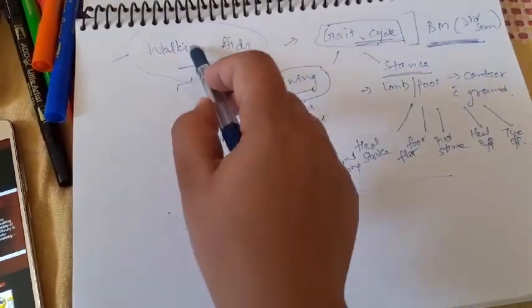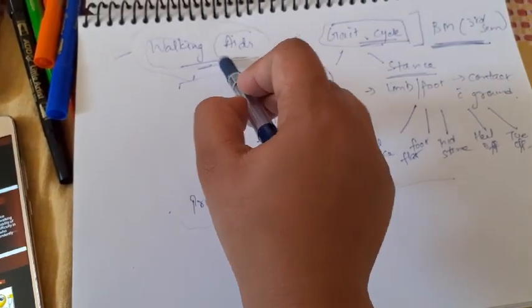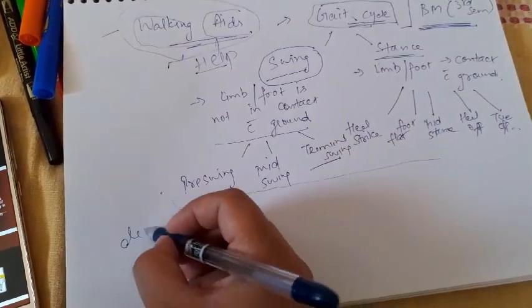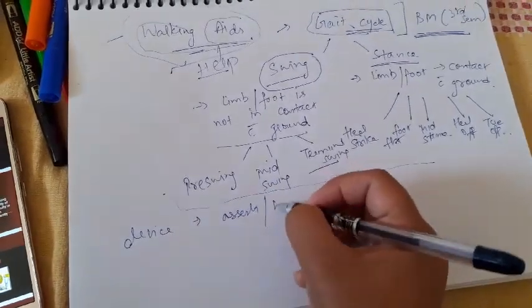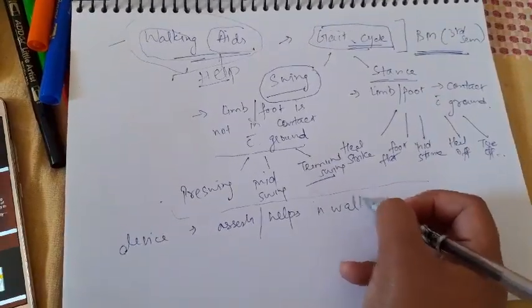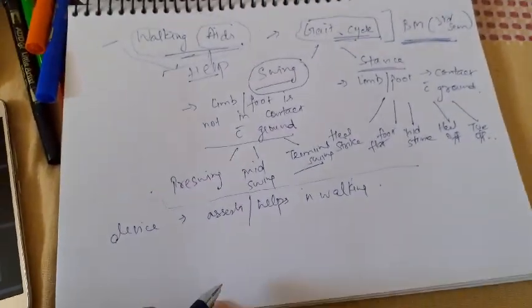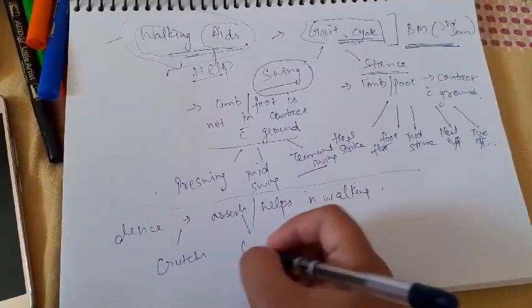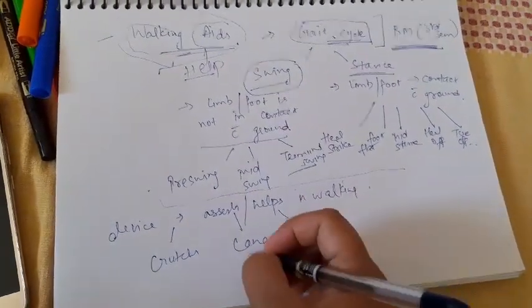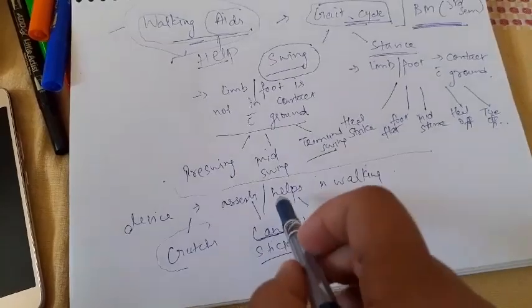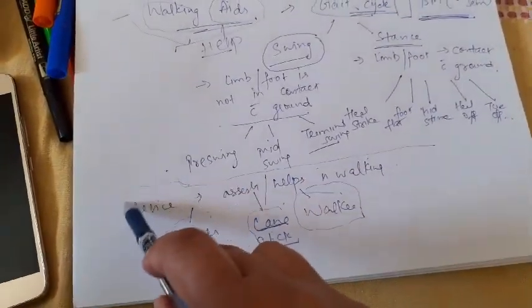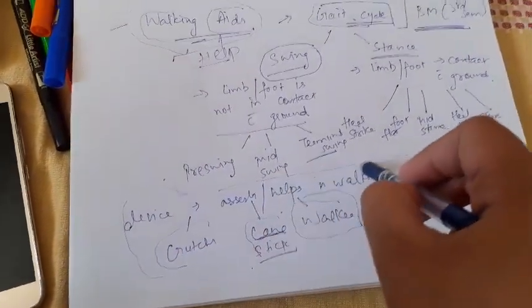Now why is all this important? First, what do you mean by the word 'walking aid'? Walking means to walk; aid means help. So basically a walking aid is any kind of device which assists or helps a person in walking. This device can be of any type - it can be a crutch, it can be a cane, or it can be a walker. A cane is a stick. We give the patient a crutch, a cane, or a walker depending upon the situation.